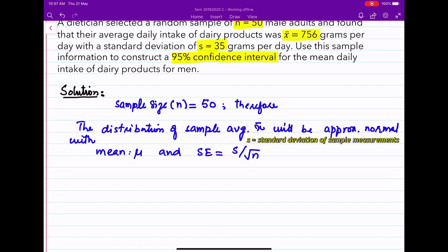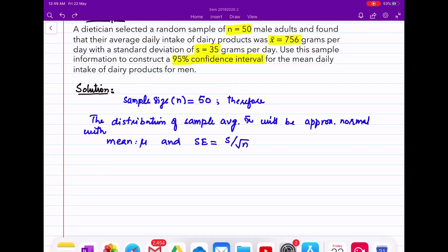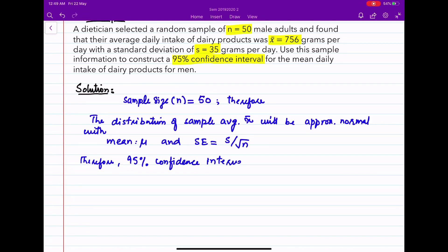s divided by square root of sample size. Therefore, a 95% confidence interval can be constructed by using normal distribution.